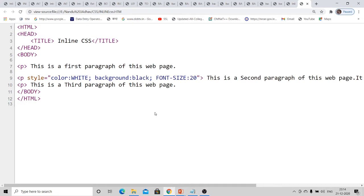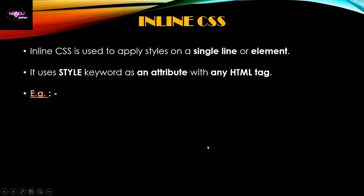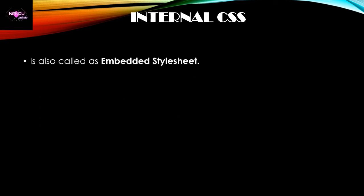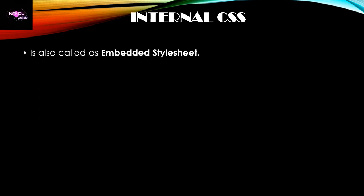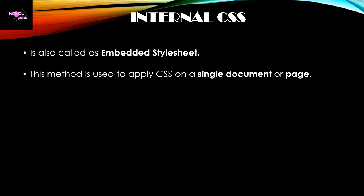Next is Internal CSS, also called Embedded Style Sheet. This method is used to apply CSS to a single web page or document. Comparing it to inline CSS: inline CSS applies style to a single statement, whereas internal CSS can apply style to multiple statements or contents within a single web page.